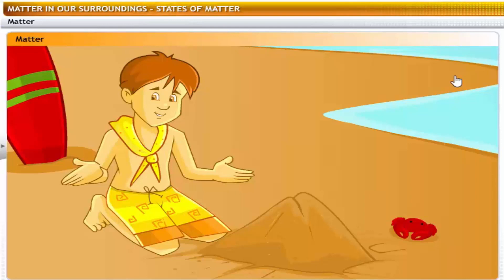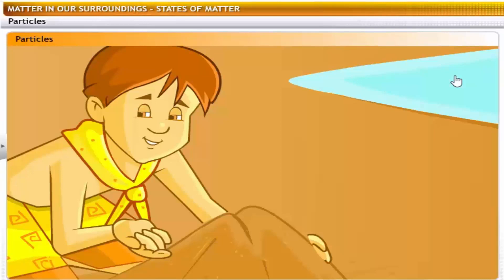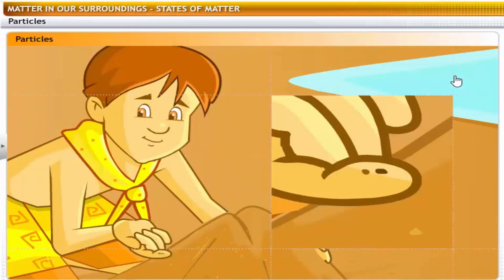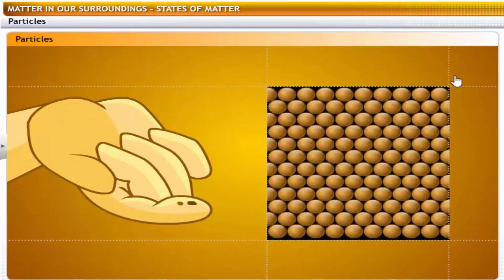So, is matter made up of something? Yes. Matter is made up of small particles. Is this grain of sand a particle? No. That grain can be further broken into smaller particles, which are not visible to the naked eye. Those are the particles that explain why matter exists in the form of solids, liquids, and gases.